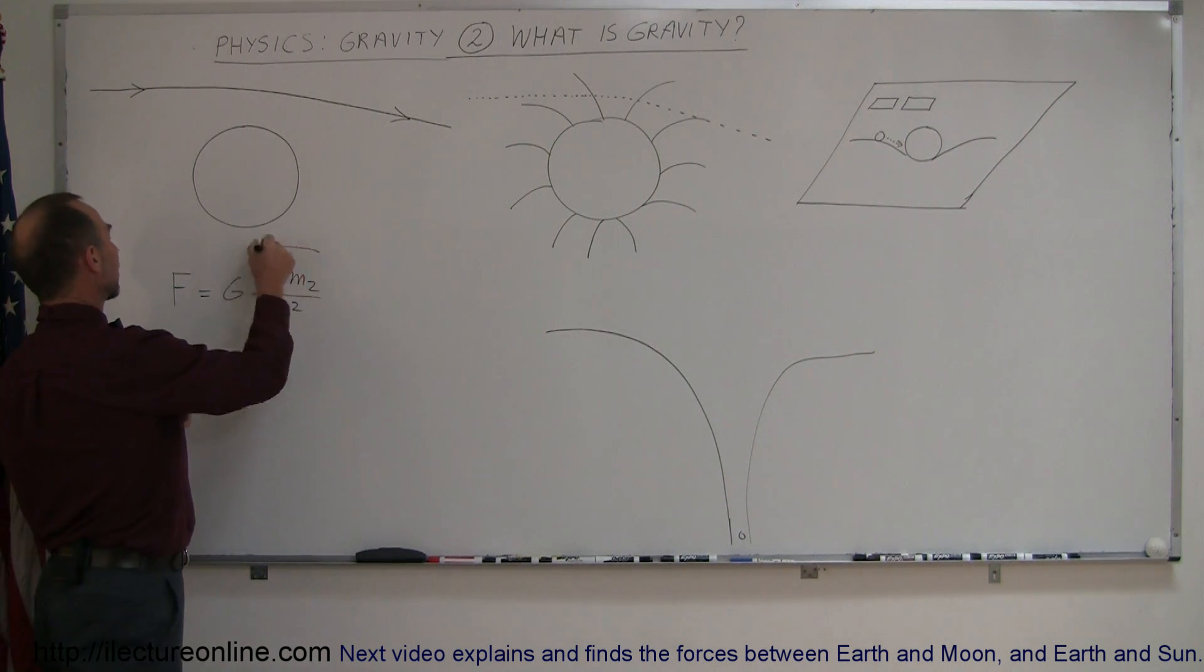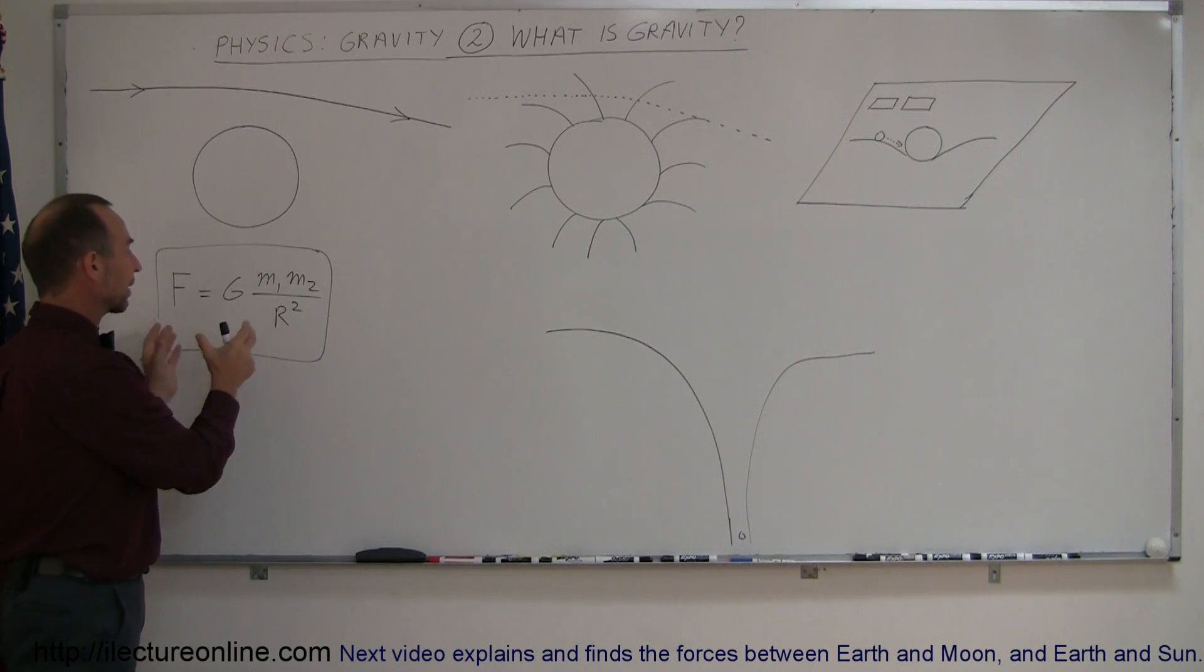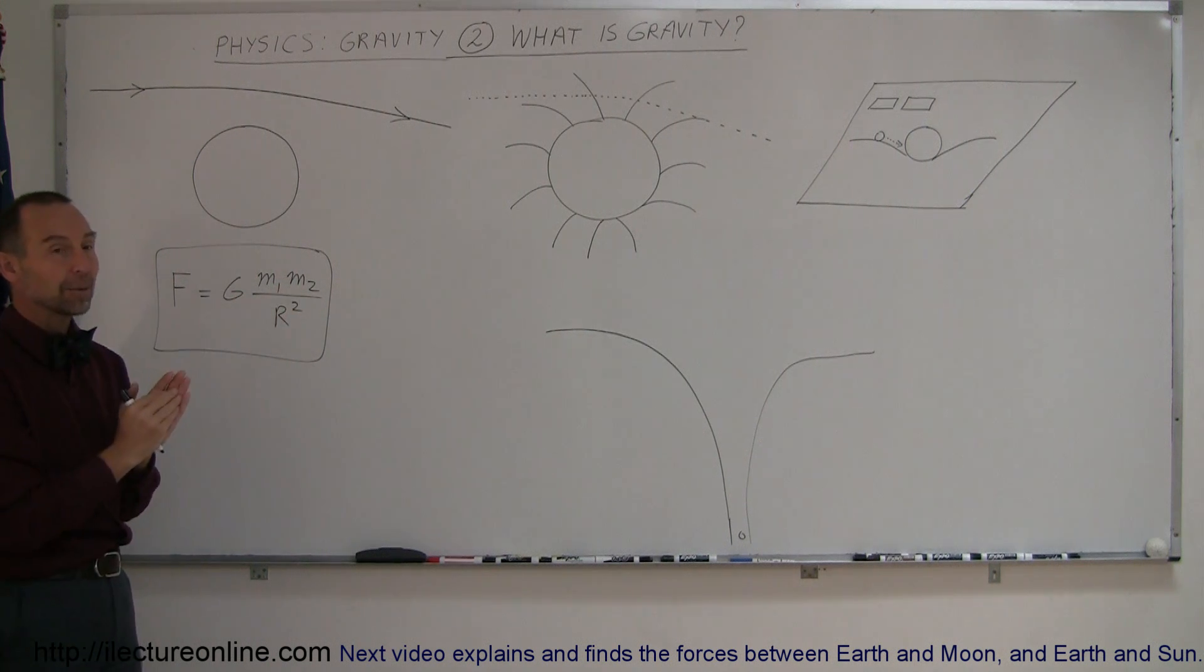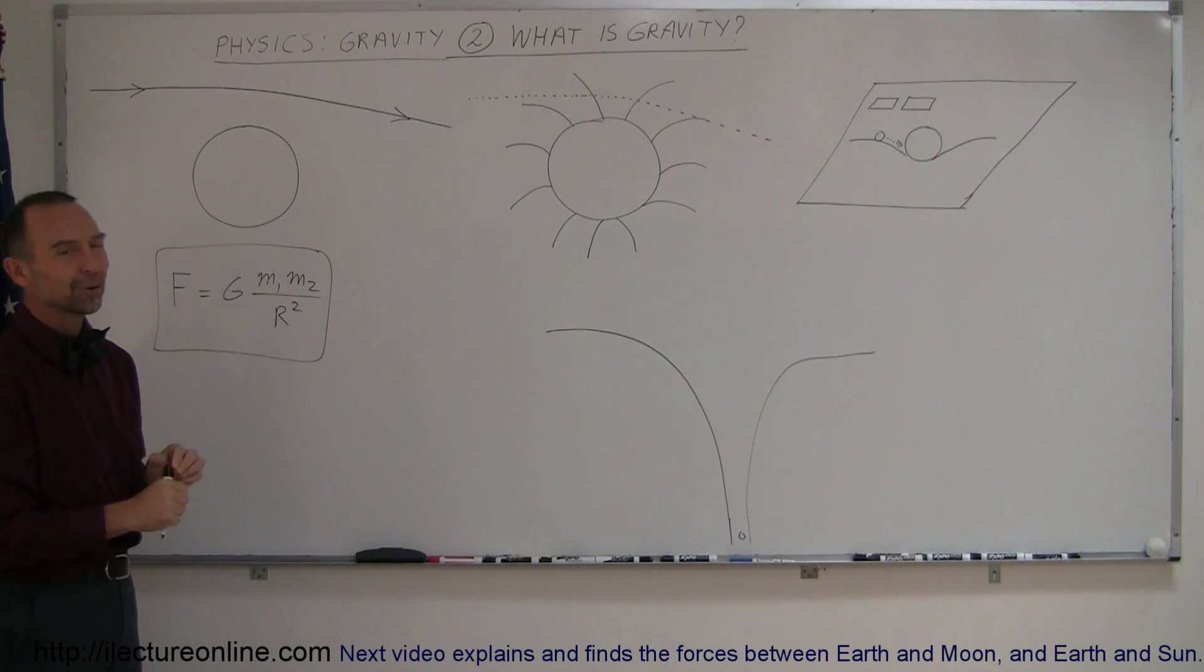And so when we talk about Newton's law of gravity and we use this equation, keep in mind this is simply a mathematical representation of what really goes on. And it helps us solve a lot of problems, but it's not truly a force between objects, just an apparent force. All right, so now that you know what gravity is, we're going to continue with all kinds of examples of how we relate to gravity.